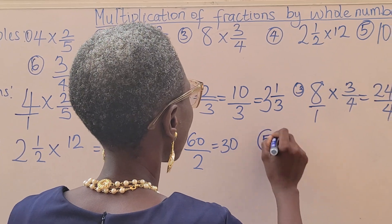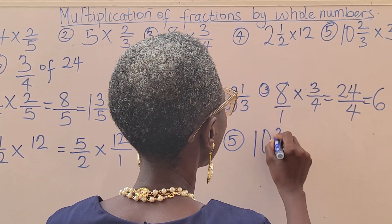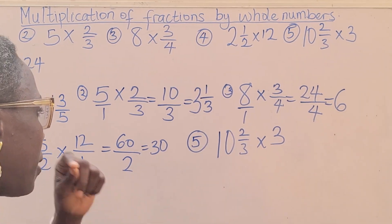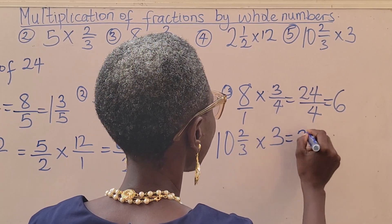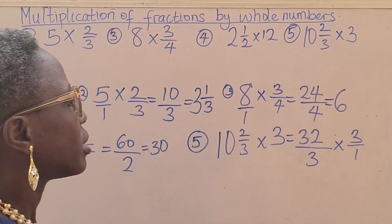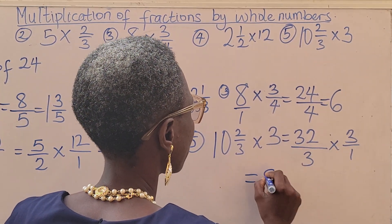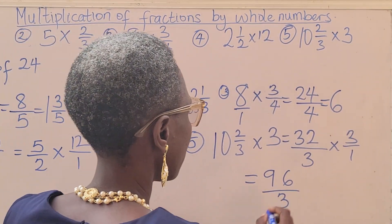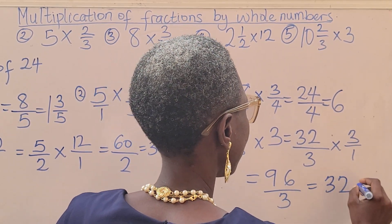Now let's go to question 5. Question 4 and question 5, yeah, the same. Mixed fraction. Now we have 10 whole number, 2 over 3, times 3. The very first thing you do, let's change this to an improper fraction. 10 times 3, that's 30. Plus 2, that's 32. Over the denominator times 3 over 1. Now the next thing is for us to multiply. 32 times 3, that's going to give us 96 over 3. 96 divided by 3 is going to give us 32. That is our final answer.